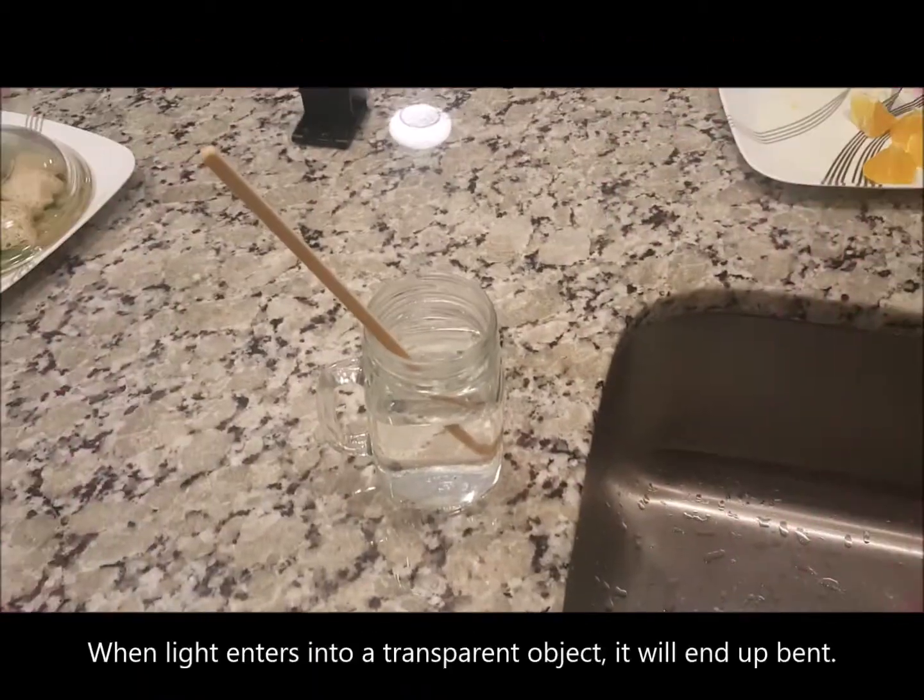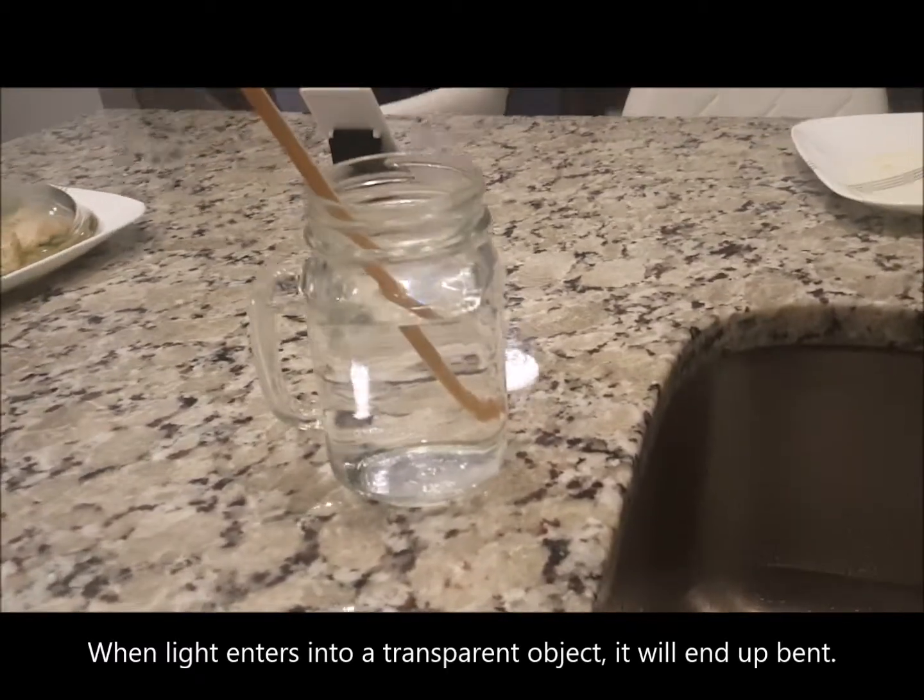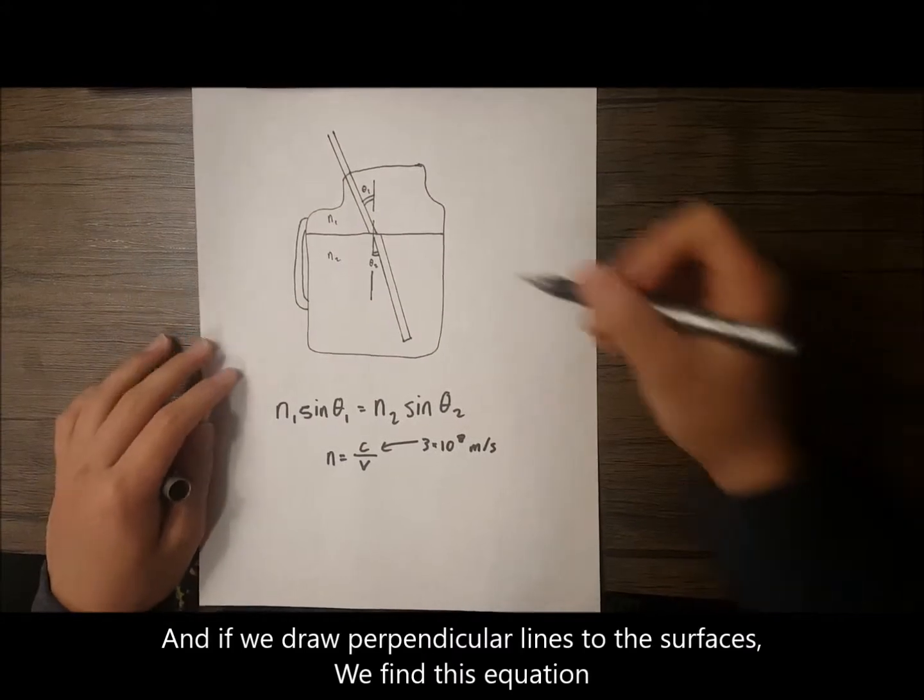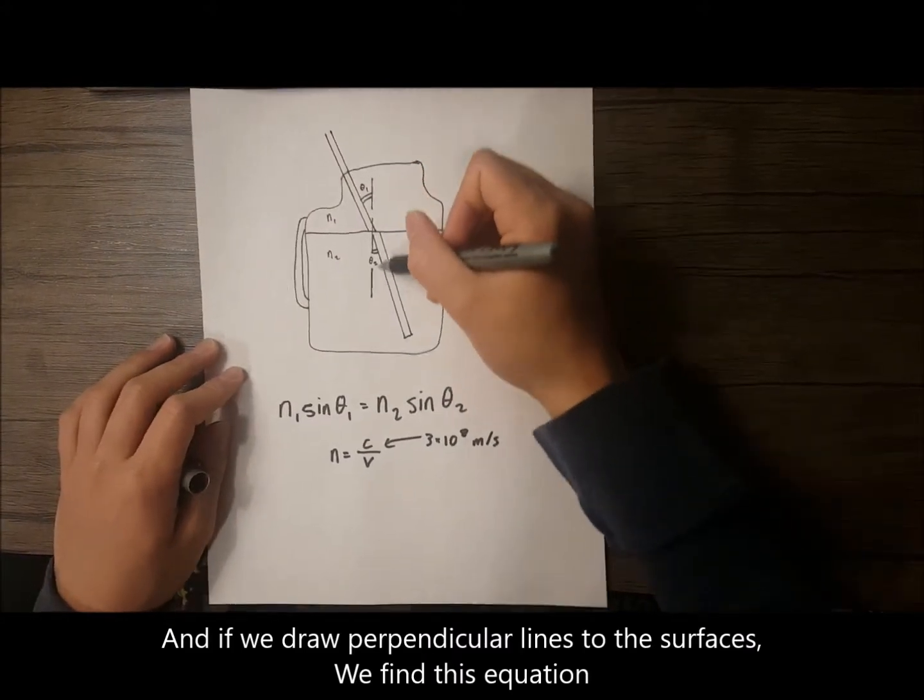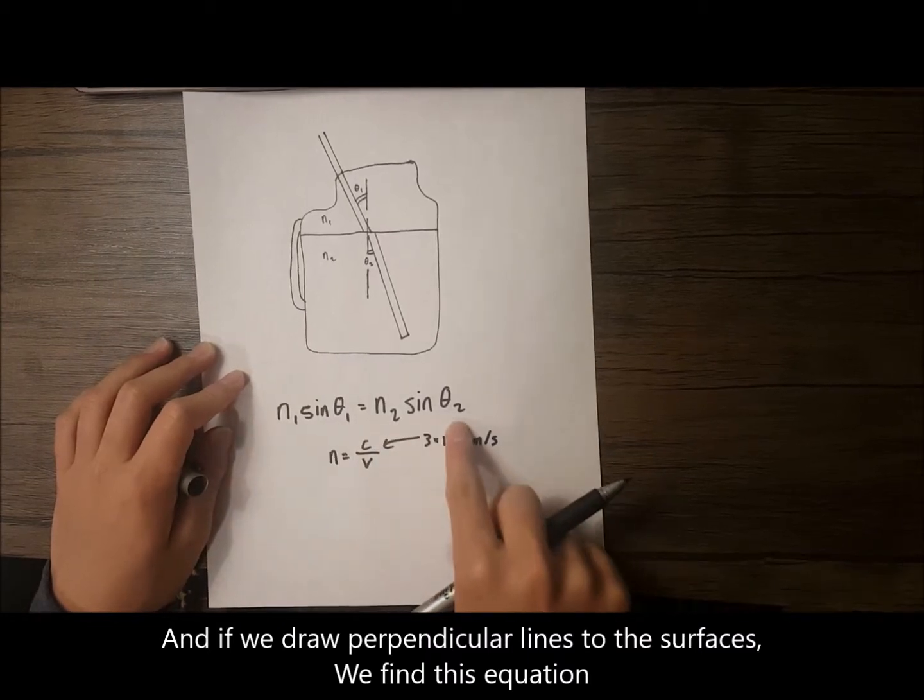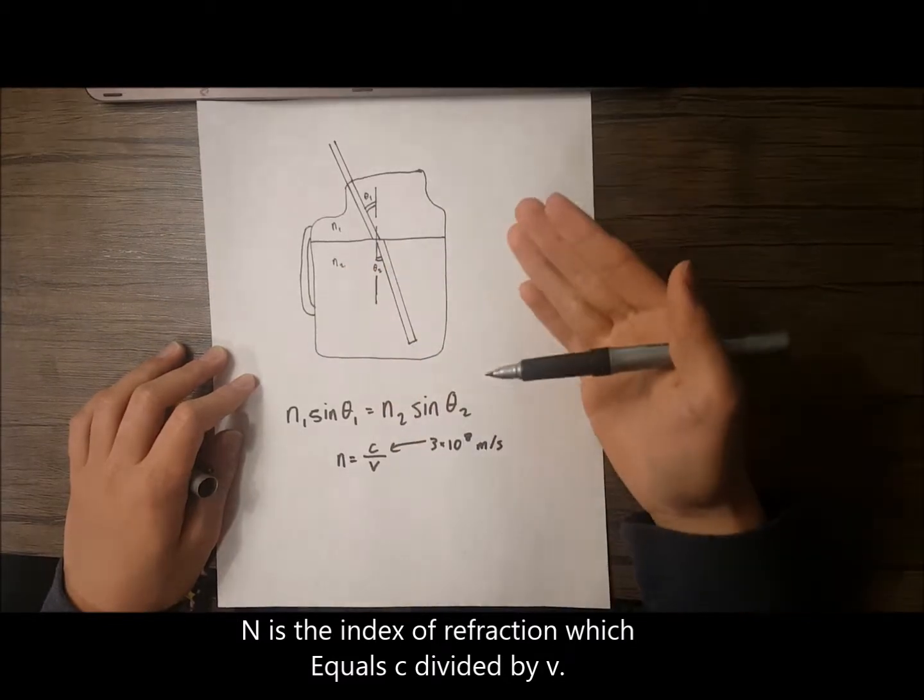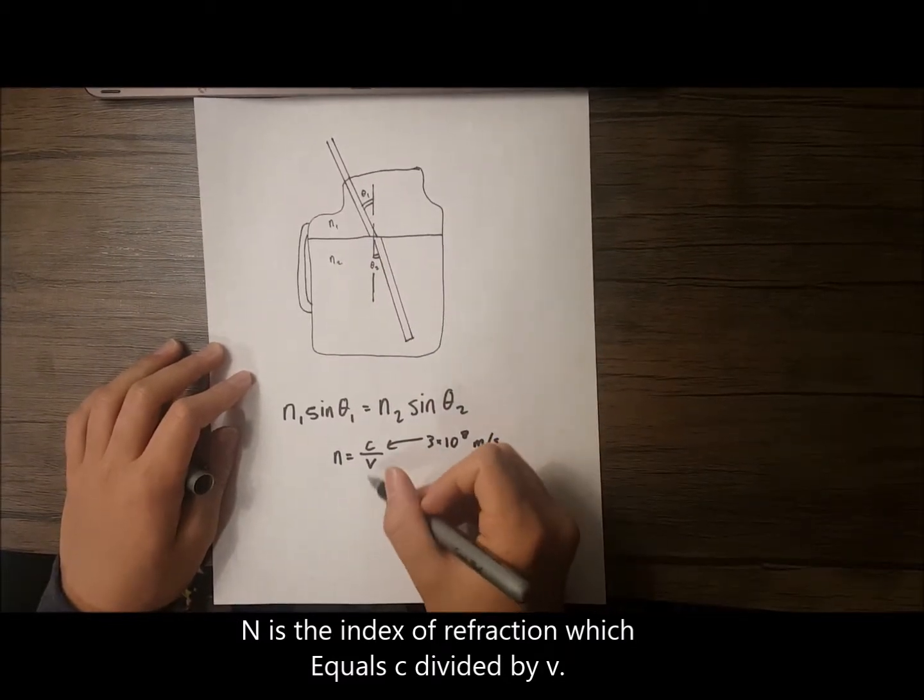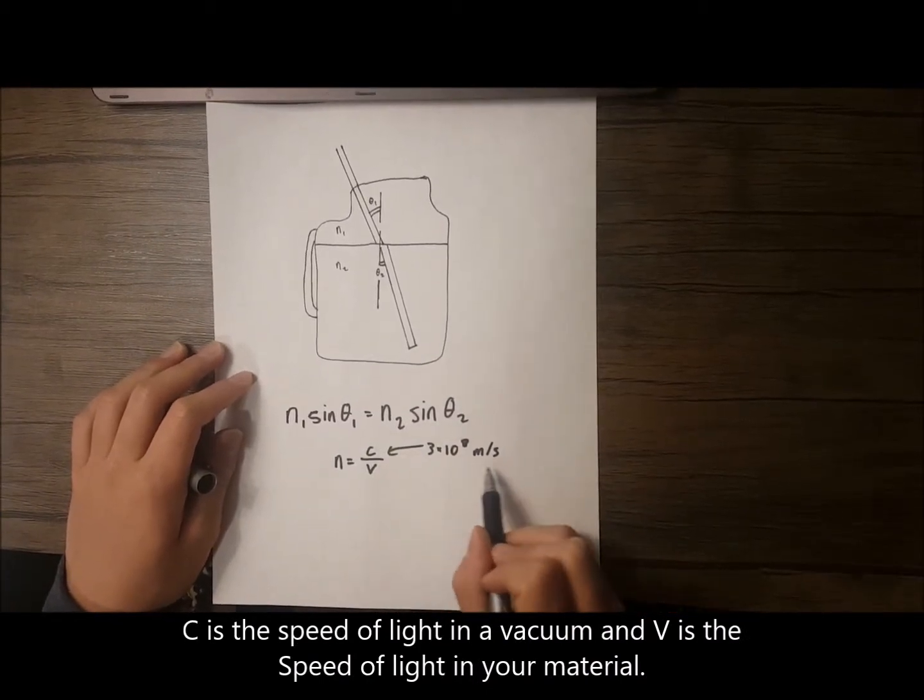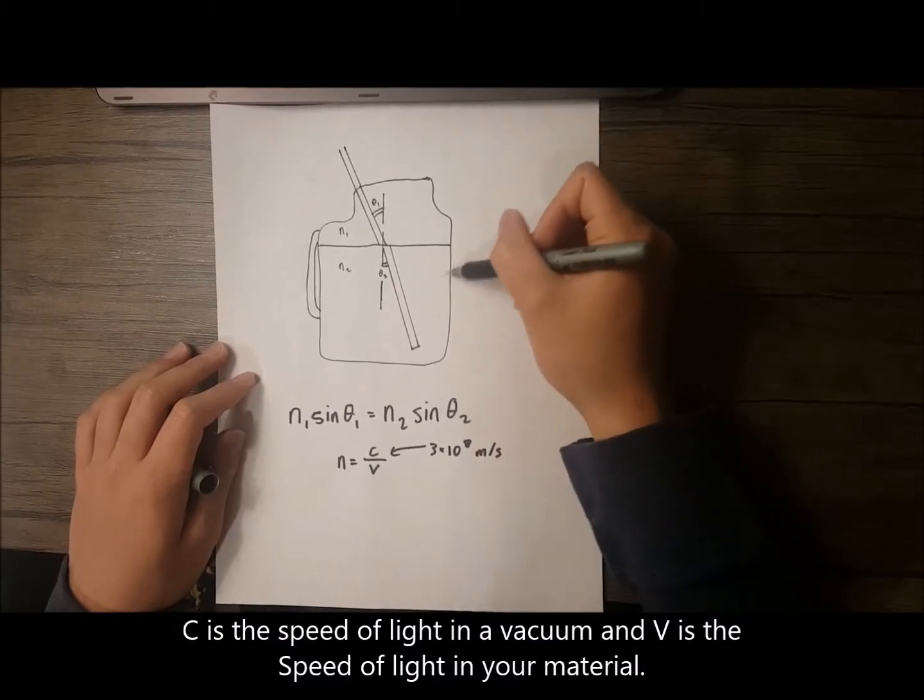Refraction! When light enters into a transparent object, it will end up bent. And if we draw perpendicular lines to the surfaces, we find this equation. N is the index of refraction, which equals C divided by V. C is the speed of light in a vacuum, and V is the speed of light in your material.